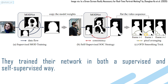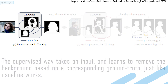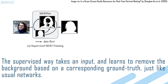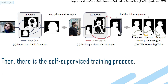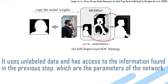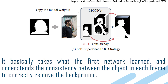They train their network in both a supervised and self-supervised way. The supervised way takes an input and learns to remove the background based on a corresponding ground truth, just like usual networks. Then there is a self-supervised training process — called self-supervised because the network does not have access to the ground truth of the videos it is trained on. It uses unlabeled data and the parameters learned in the first step, basically understanding the consistency between the object in each frame to correctly remove the background.